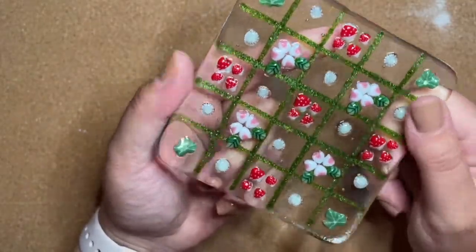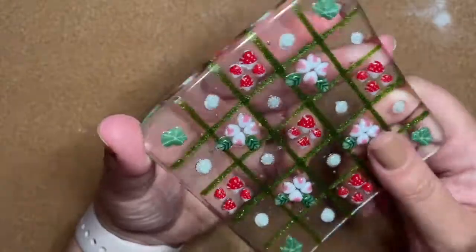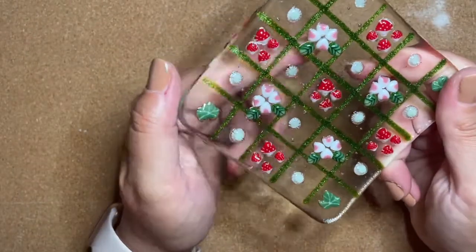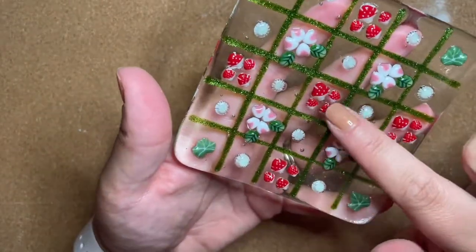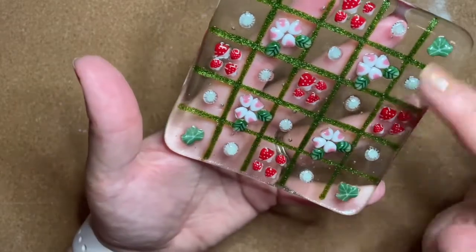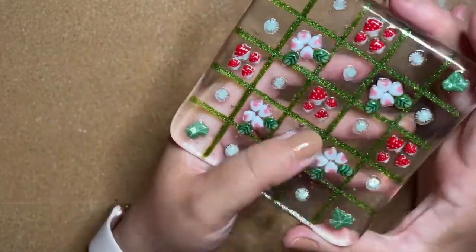Today I'm going to be making a ring dish that I like to call Woodland Dream because of the little mushrooms and flowers and ivy leaves that are on it.